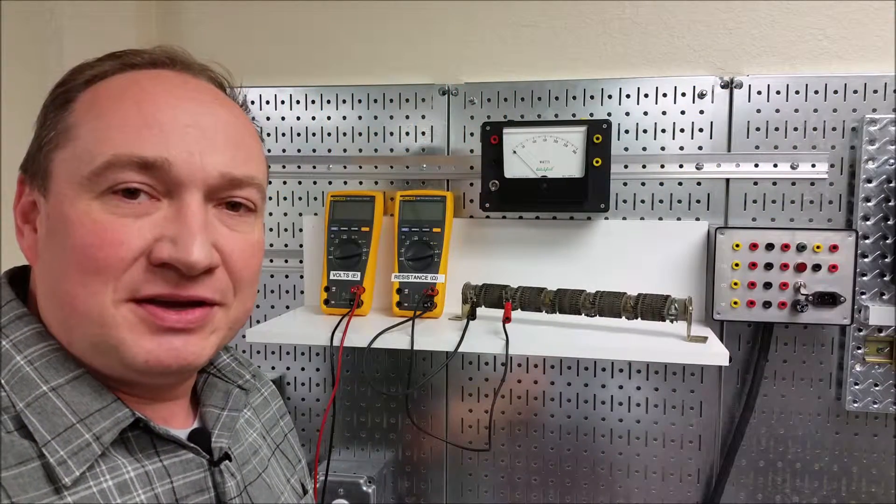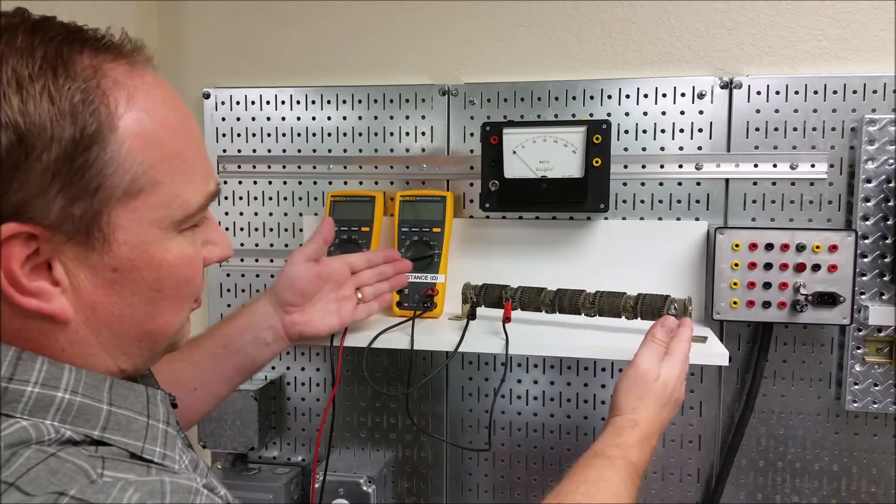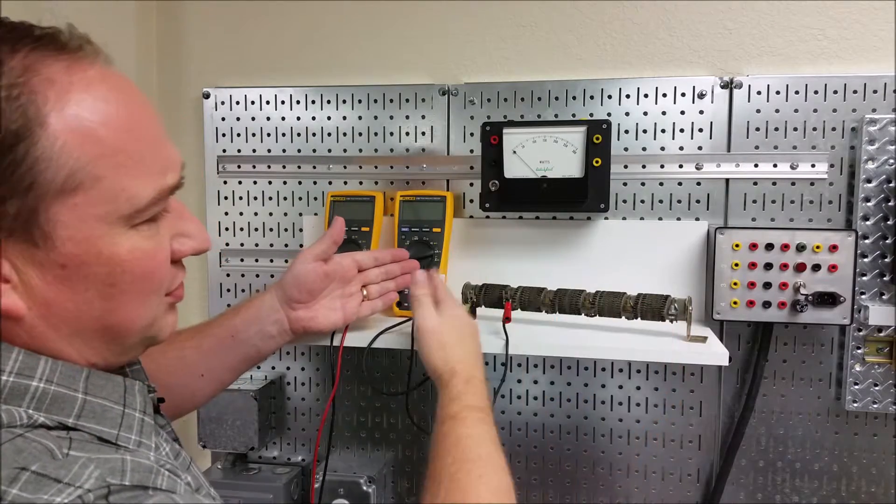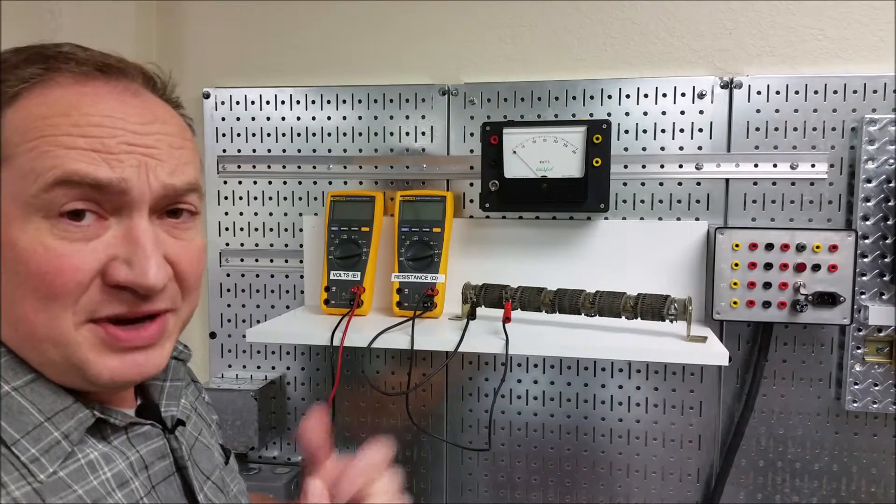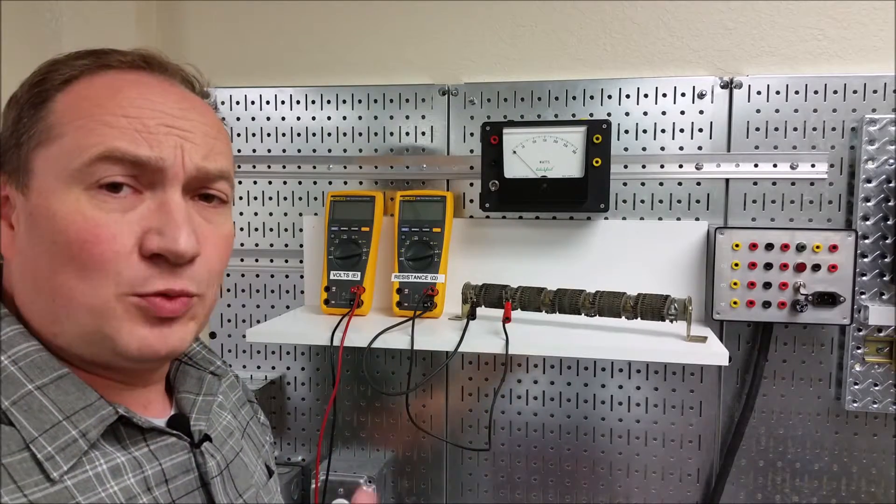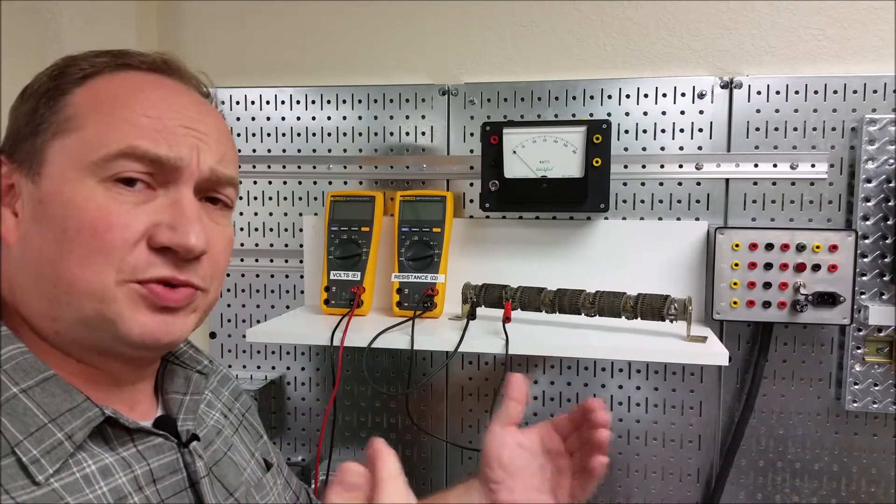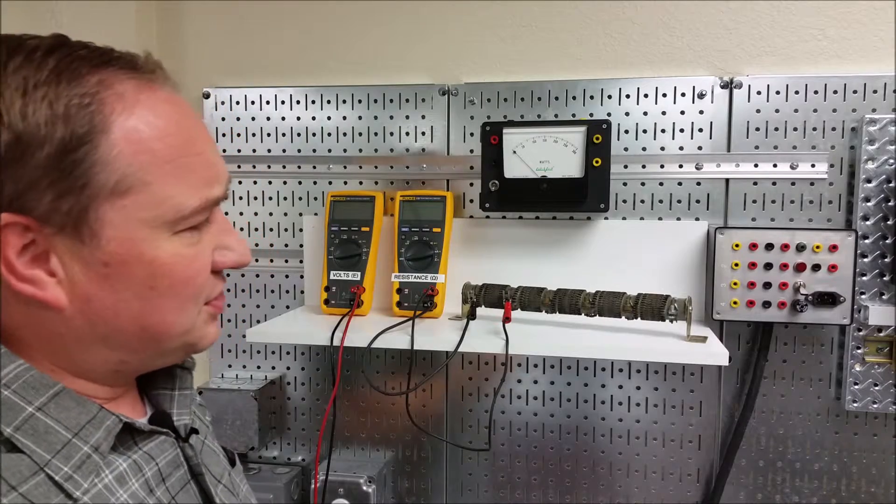Welcome to this segment of eTech. Today we're working with this large power resistor, which should have about 35 ohms across it. That's what the package says, but resistors can have quite a wide range of tolerance from what's actually printed on them, and so it's always good to check.